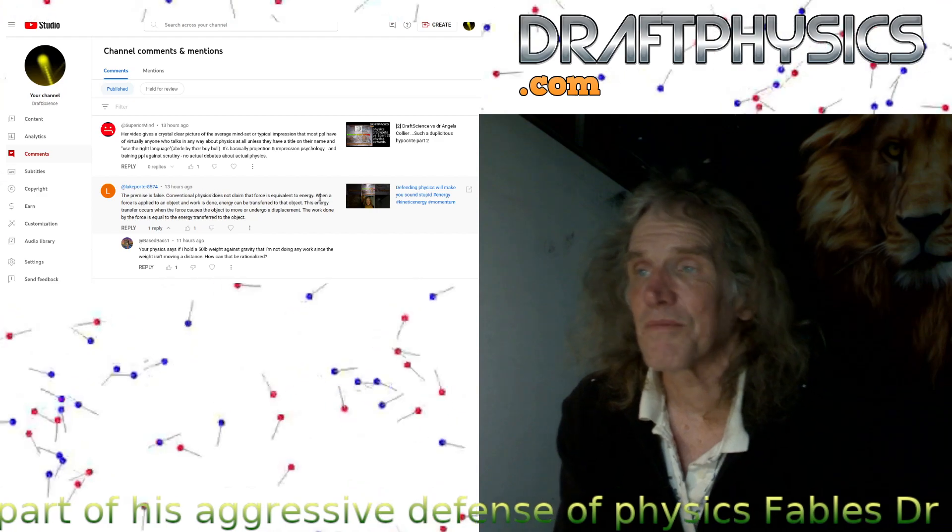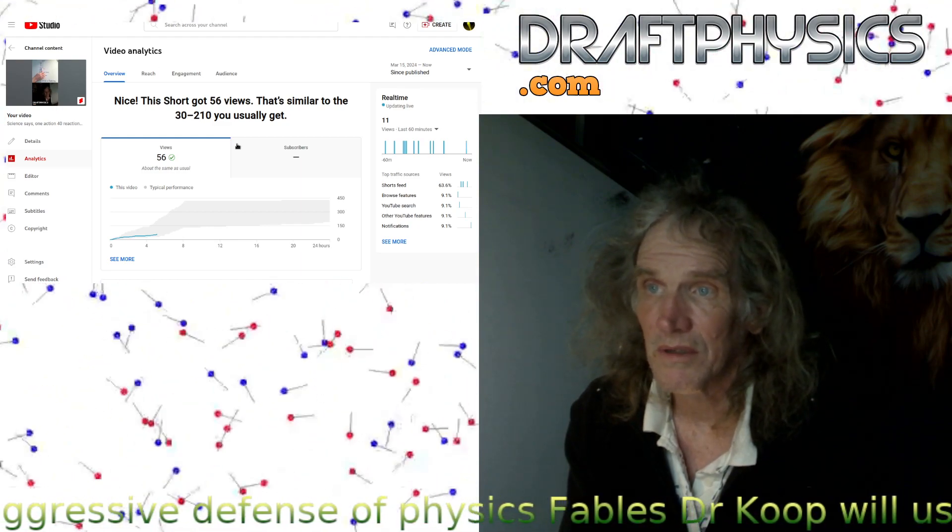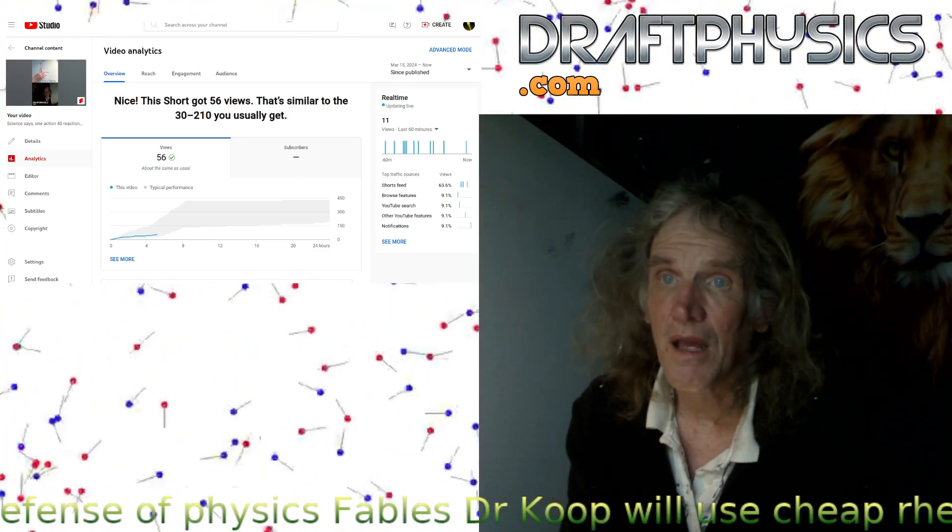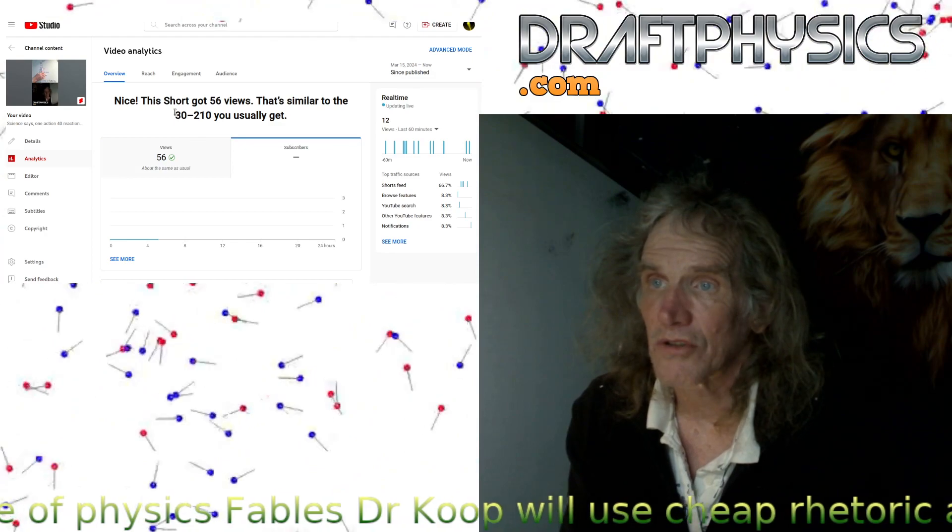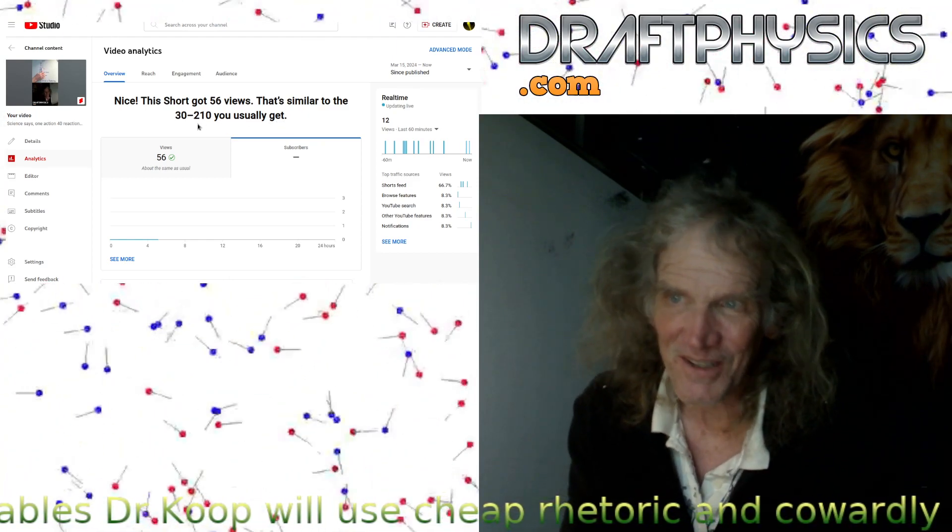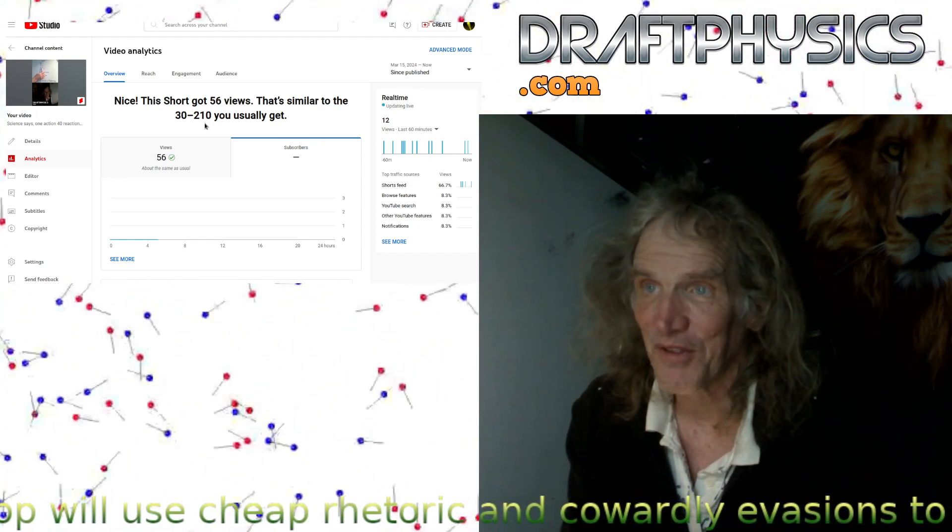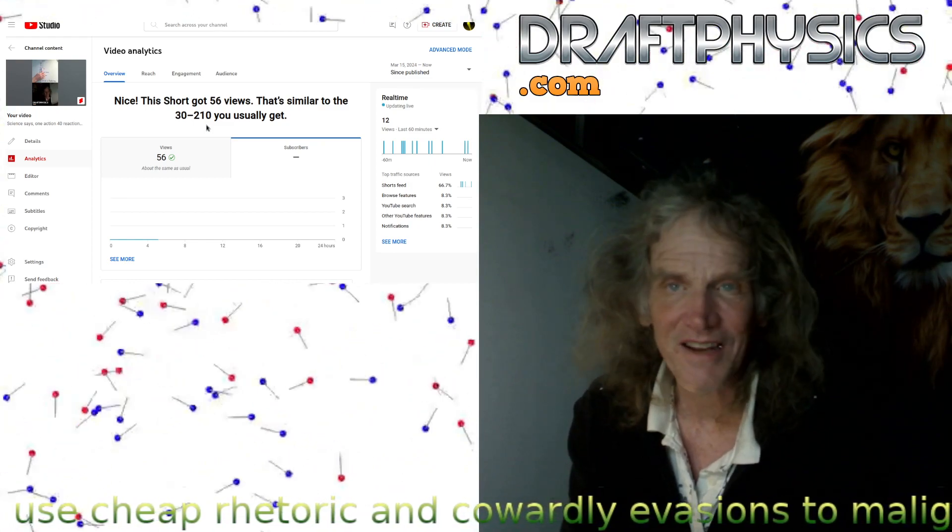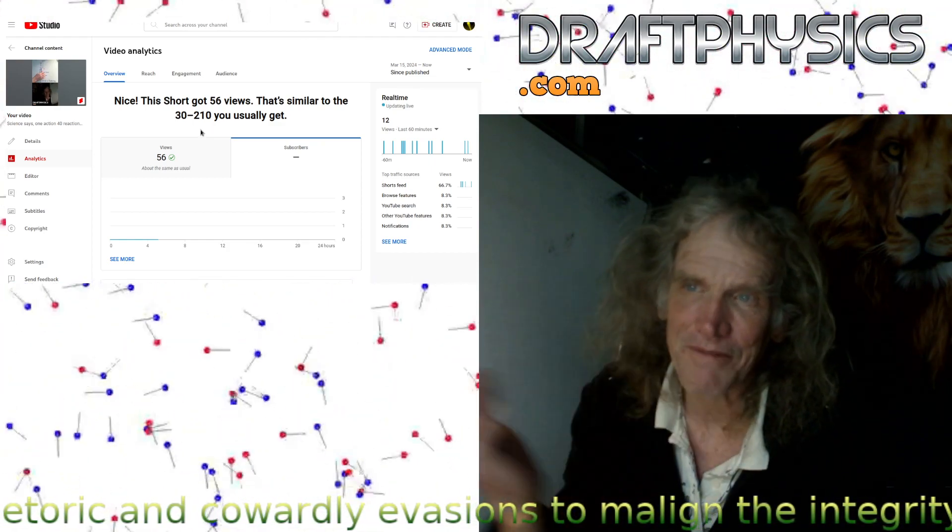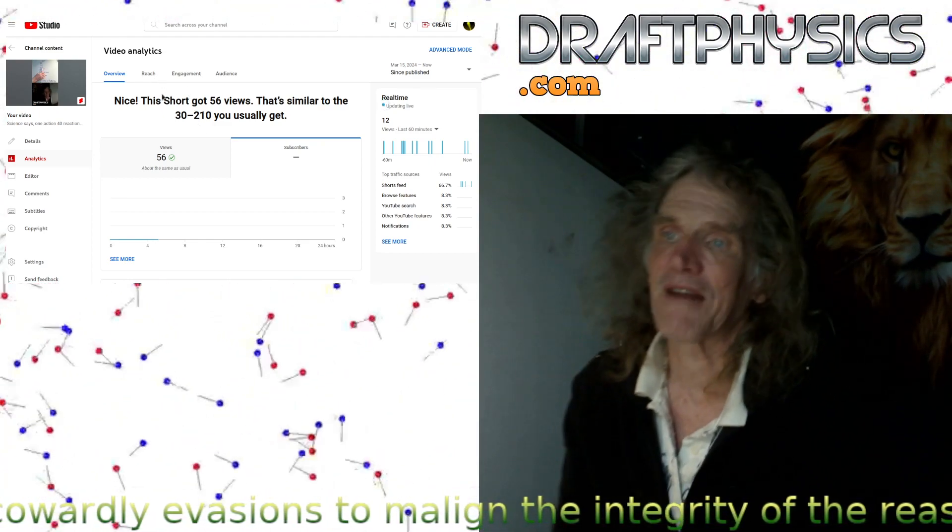I really don't get you people. So this is the most recent short. And so this is the kind of funny thing that YouTube posts. What the hell is that? Nice. This short got 56 views. That's similar to the 30 to 210 you usually get. So I mean, look at this range. 30 to 210. Oh it's hilarious. Yeah, it's just like 30 to 210. It's like 10. And it's almost like their V squared thing. It's just hilarious. So the videos were getting an average of 400 views. And now they're getting, you know, whatever, 80 views or something as the average of the last three. So they've clearly degraded the functionality.